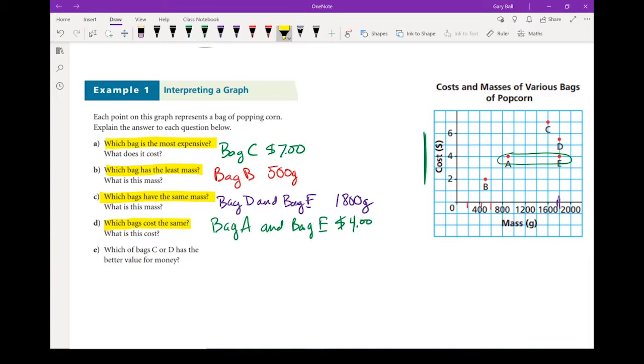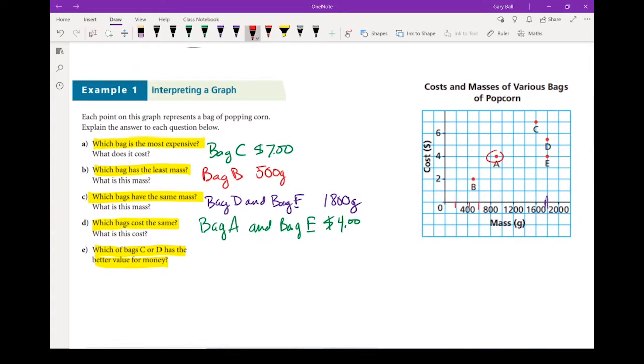Now for my last question, it asks which of bags C or D has better value for money? Okay, so now we're going to look at both things together. Let's take a look at bags A and Bag E. If I look at that value for money, in both cases, they both cost $4.